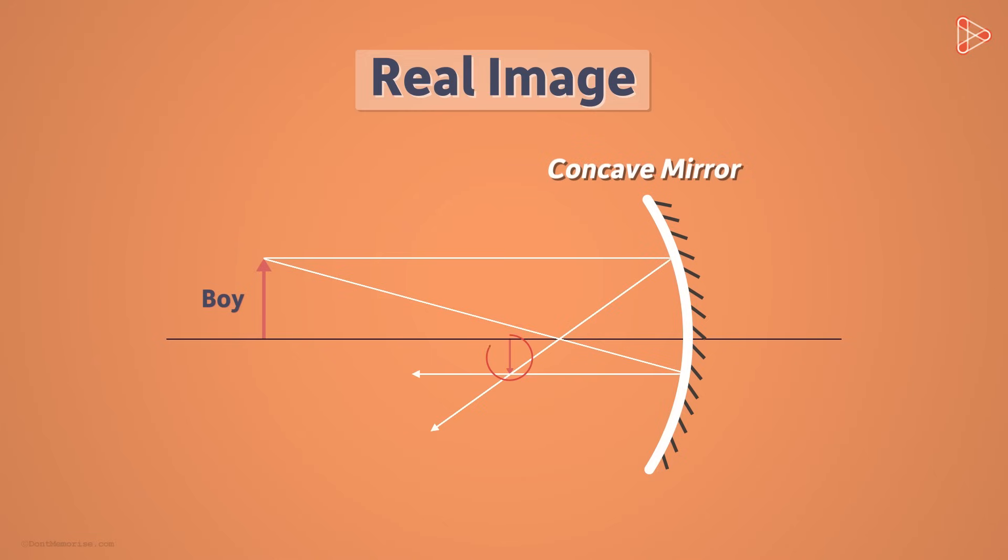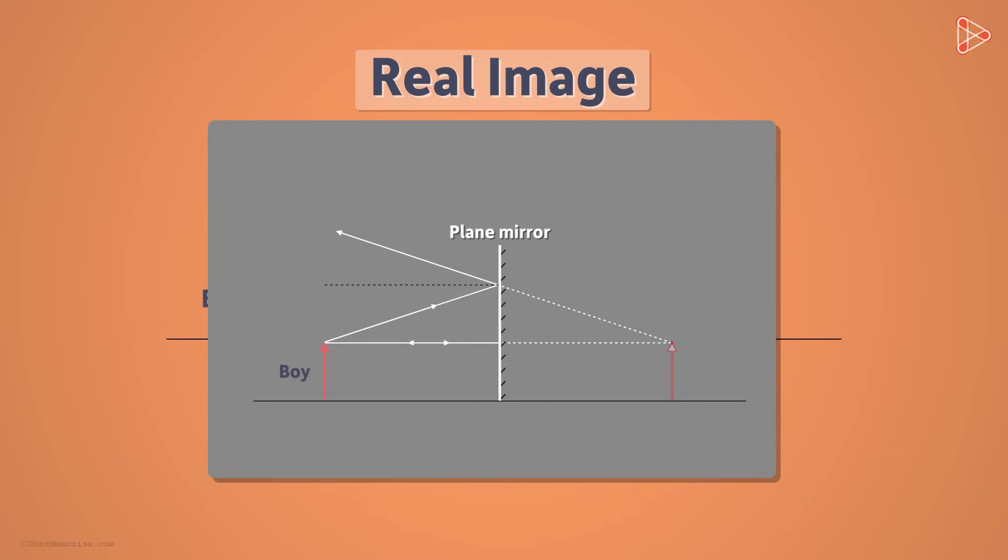When we look at the real image formed by a concave mirror, it also seems to us that the light rays are diverging. But here the rays actually are diverging from a point in front of a mirror. Whereas in the case of a plane mirror, it appears to us that the rays were diverging from the point behind the mirror.